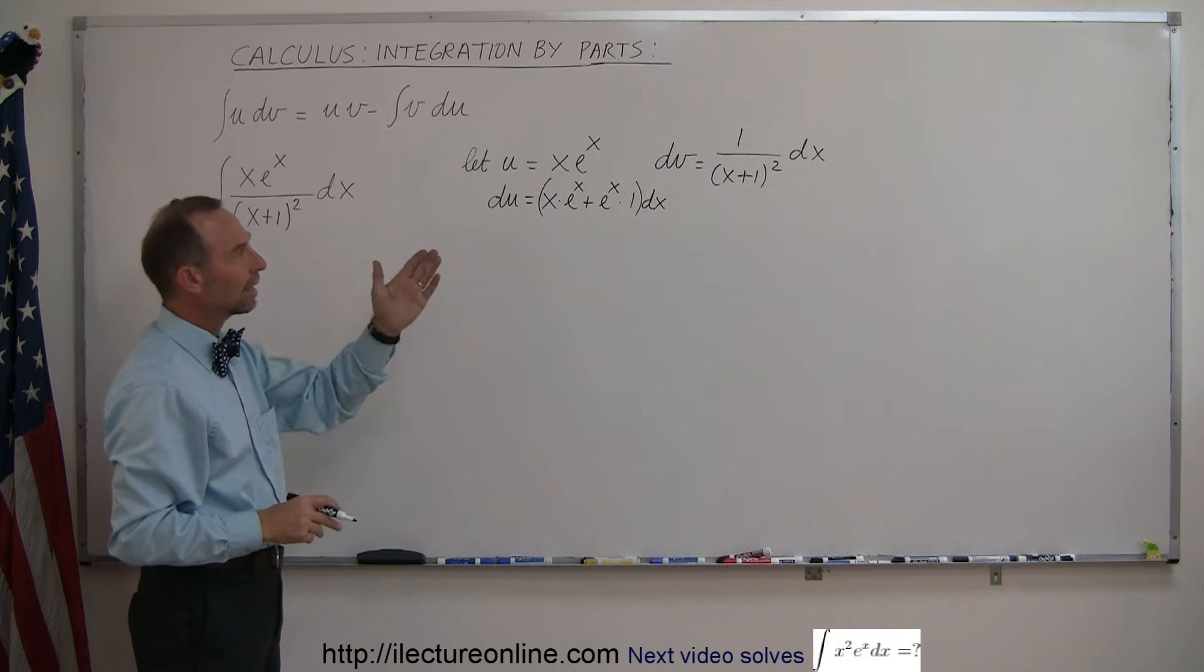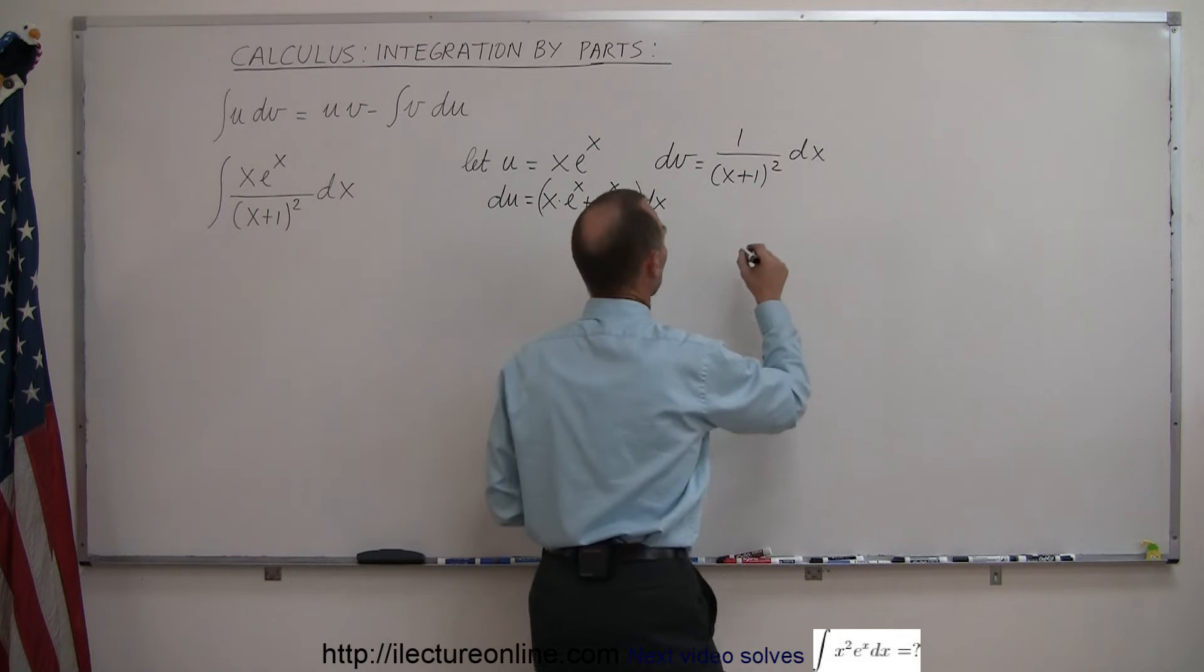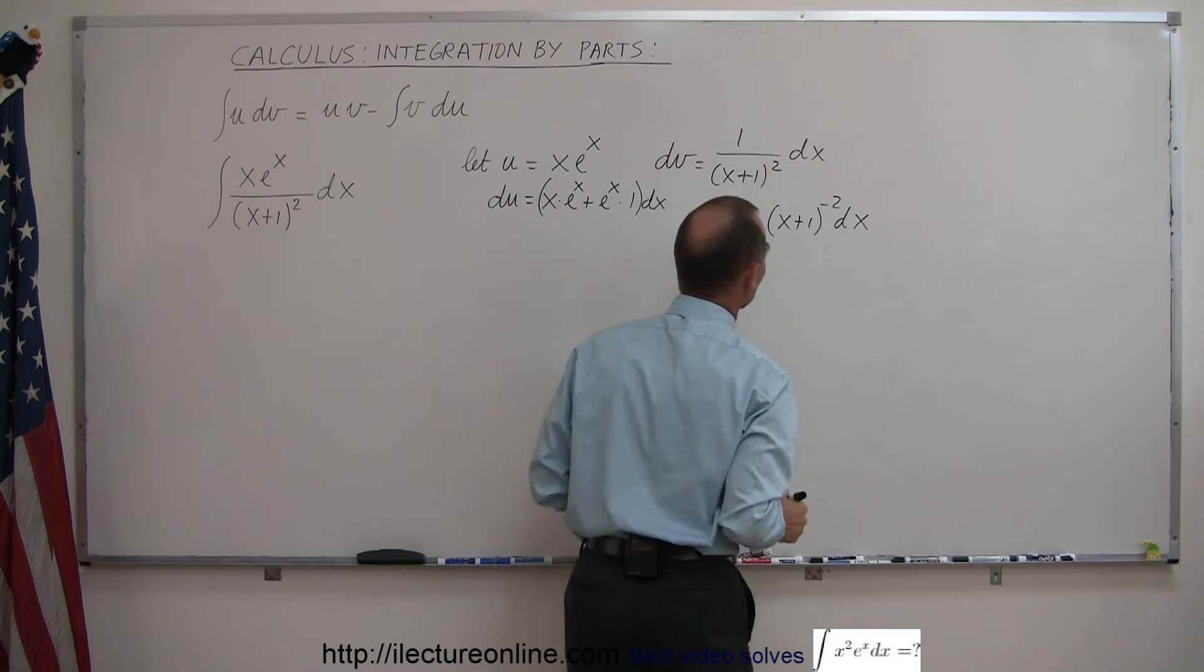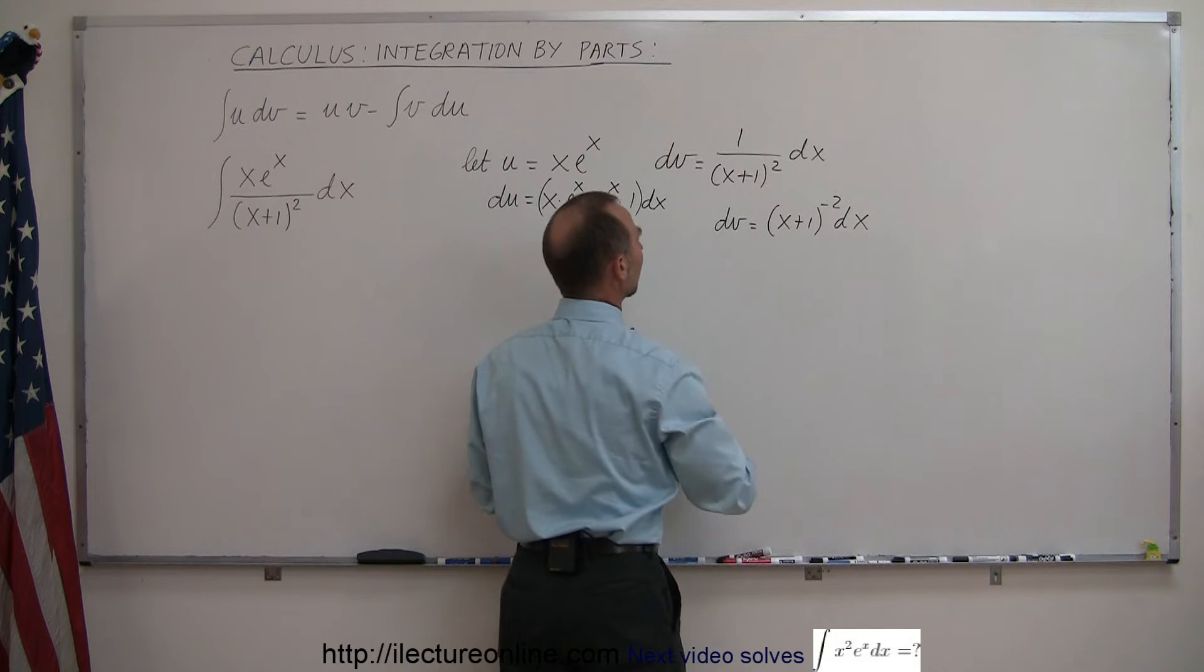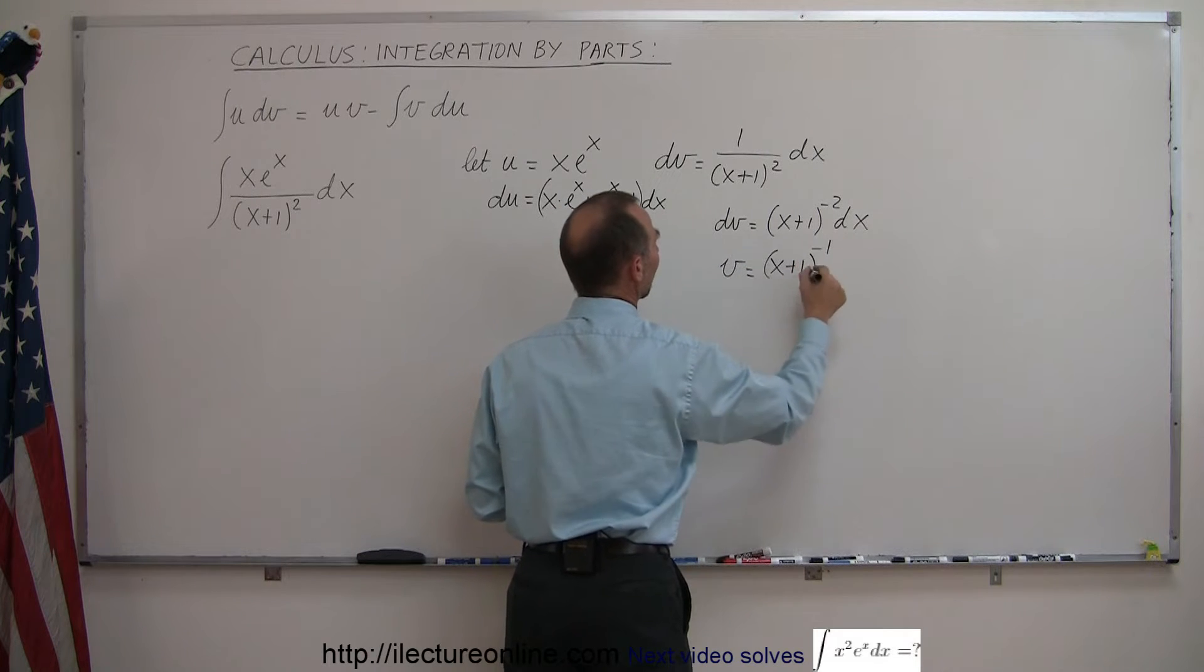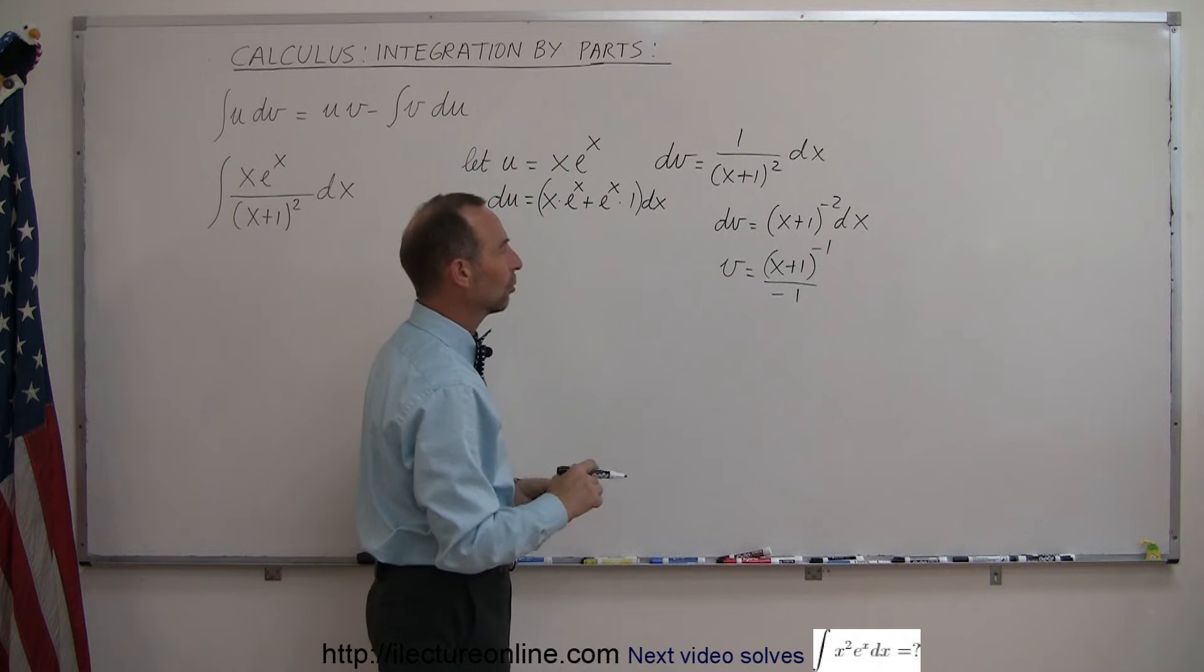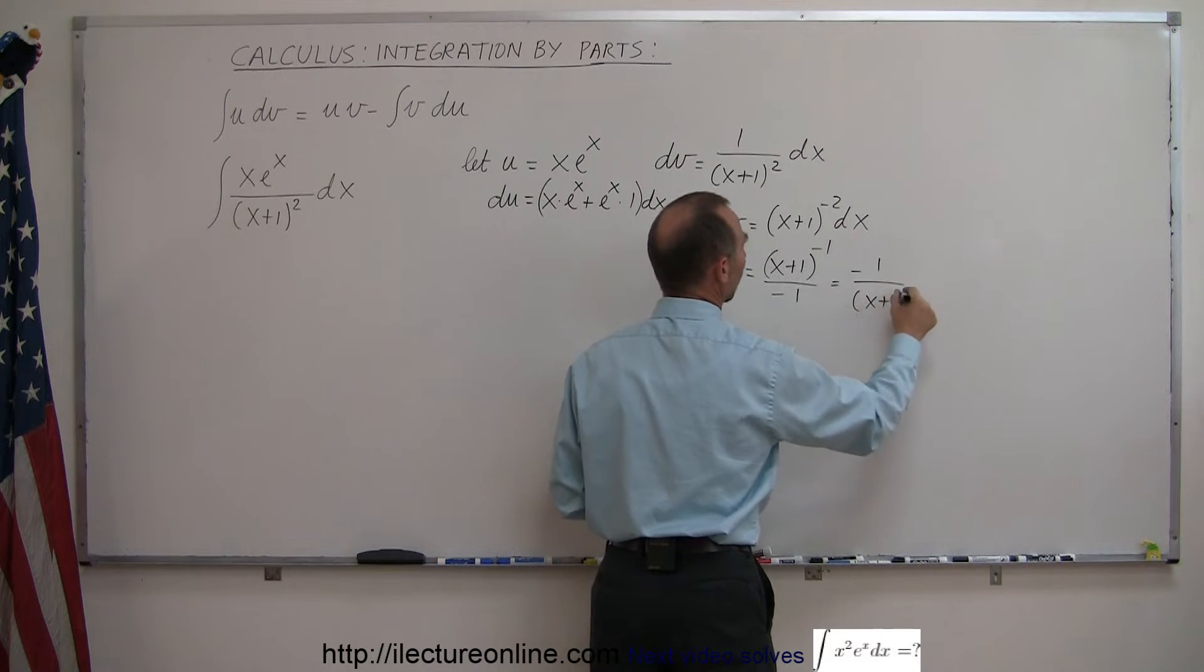And now we have to take the integral of dv and here we probably want to rearrange that a little bit, so we can say that dv is equal to the quantity x plus 1 to the negative 2 power dx. And that's easily integrated because all we have to do is add 1 to the exponent and divide by the new exponent, so we can say that v is equal to x plus 1 to the negative 1 power divided by negative 1, of course plus constant integration, but we'll leave that till the very end, we don't have to do that now. And so rewriting this we can say, well this is equal to minus 1 over x plus 1.